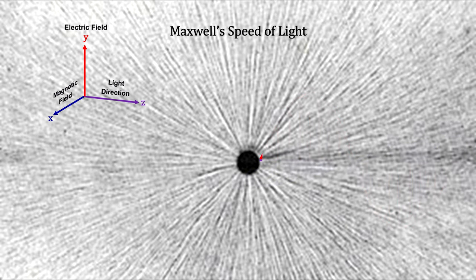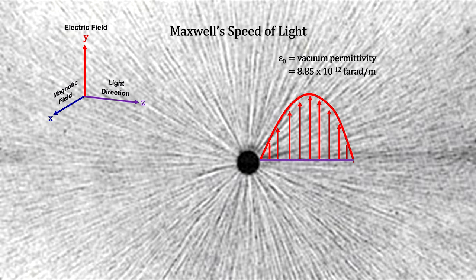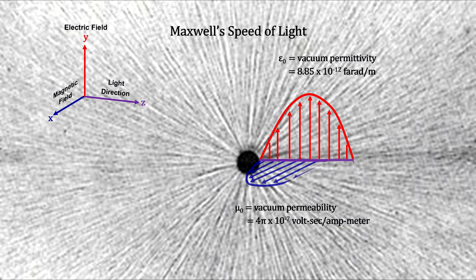Earlier, Faraday had measured the resistance of empty space to the forming of an electric field called permittivity. Ampere had measured the resistance of empty space to the forming of a magnetic field called permeability.